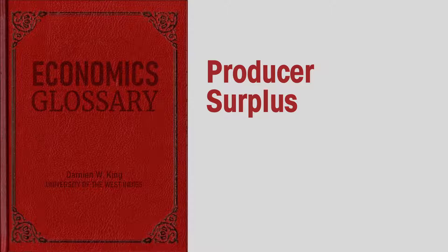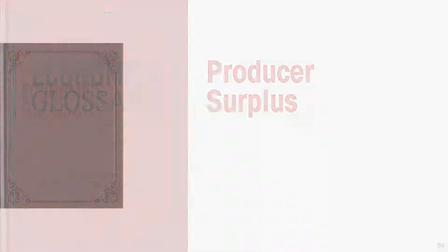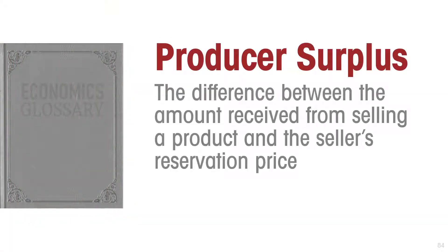Producer surplus is the difference between the amount received from selling a product and the lowest price that the seller would have been willing to accept — the seller's reservation price.